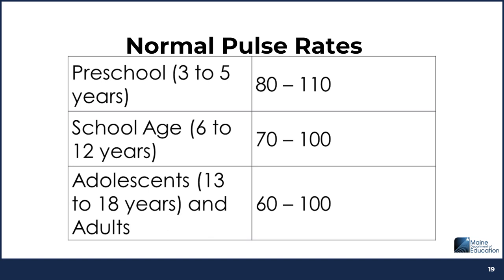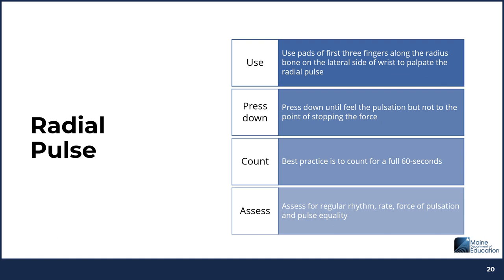Normal pulse rates are noted in the chart. School-aged children tend to have a pulse rate between 70 and 100 beats per minute. Common places to palpate include the radial, carotid, apical, and brachial pulse. For the radial pulse, use the three pads of your fingers and follow along the radius bone on the lateral side of the wrist. Use enough pressure to feel the pulsation but not so much that it stops the force. Best practice is to count for a full 60 seconds, assessing for rhythm, rate, force of pulsation, and pulse equality by comparing both sides.